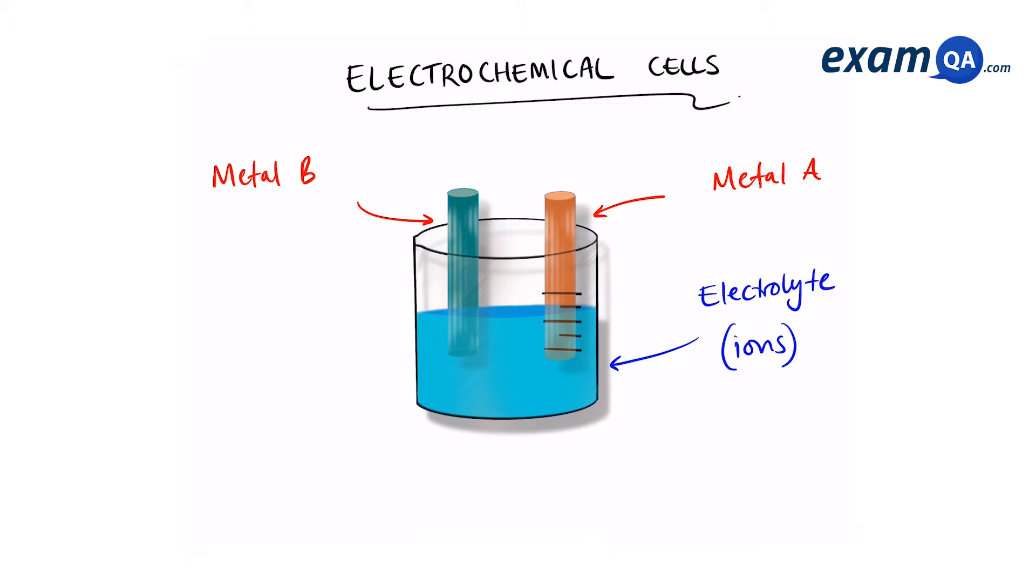Finally, the two electrodes are connected together using a metal wire. Now remember, both electrodes are made of metals, which means both of them want to lose electrons. However, different metals have different reactivities.